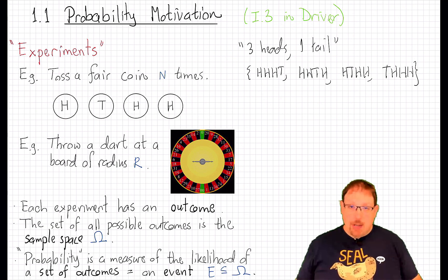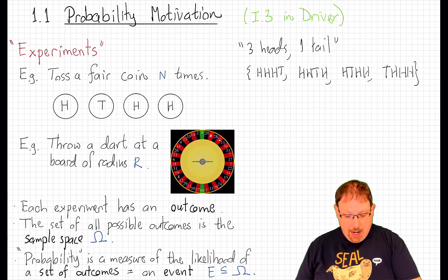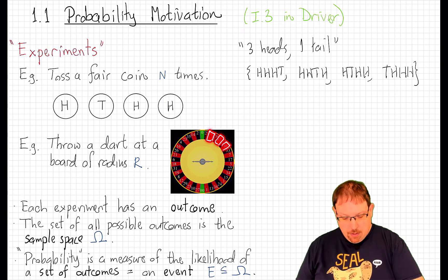But we might be interested in other kinds of events. For example, the event that we hit one of these red numbers. That event is a union of these nearly rectangular circular sectors.